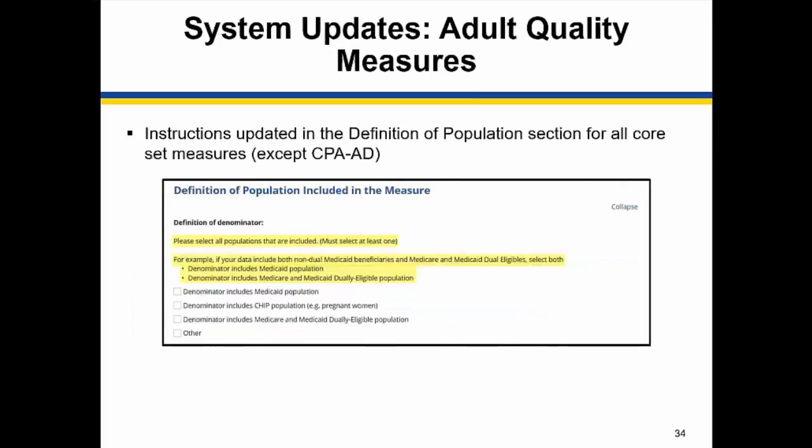Now we will look at the changes specific to each core set measure. For adult quality measures reports in 2019, instructions were updated in the Definition of Population section for all core set measures except CPA-AD. As a note, this is not a specification change, rather instructions to help your state ensure data quality.